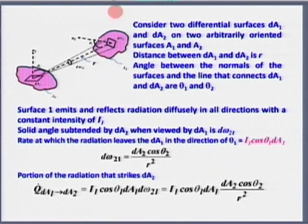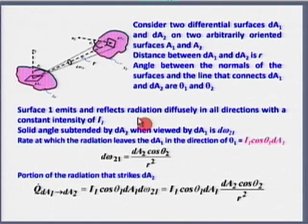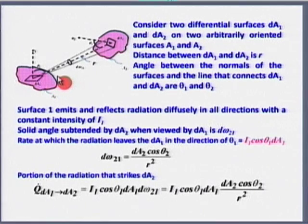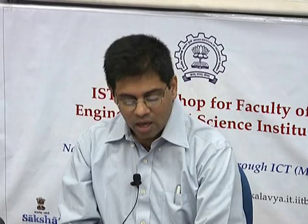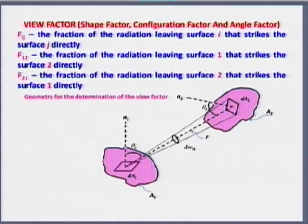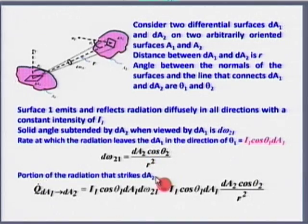Surface 1 emits and reflects radiation diffusely — meaning intensity I is constant with no directional dependence. The solid angle dω₂₁ subtended by dA2 at the vertex is dA2·cosθ2 divided by r², because the normal projected area forms a cone of radius r. Now we write the energy transfer: q from dA1 to dA2 equals I₁·cosθ1·dA1·dω₂₁.